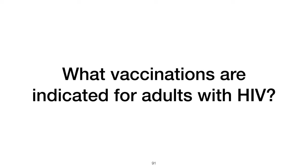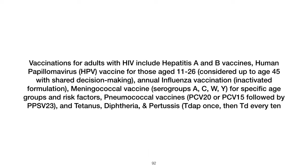What vaccinations are indicated for adults with HIV? Vaccinations for adults with HIV include hepatitis A and B vaccines, HPV vaccine for those aged 11 to 26 (considered up to age 45 with shared decision-making), annual inactivated influenza vaccination, meningococcal vaccine (serogroups A, C, W, Y), pneumococcal vaccines (PCV20 or PCV15 followed by PPSV23), and tetanus/diphtheria/pertussis — Tdap once, then Td every 10 years.